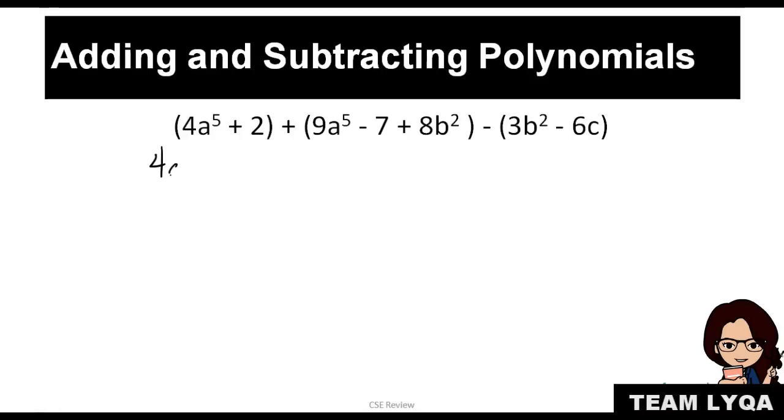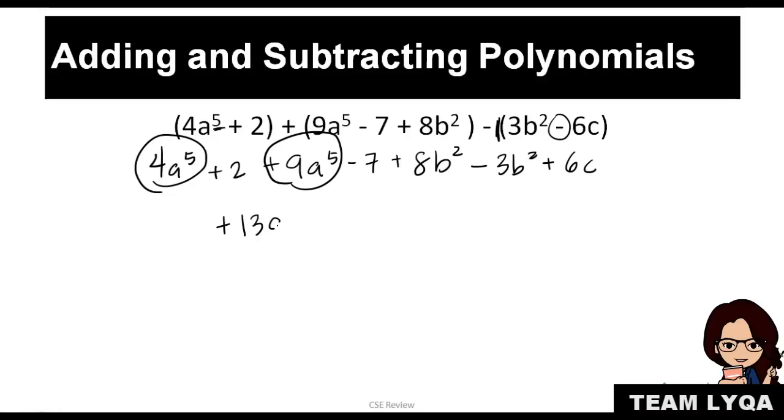So let's do it. Same concept. 4A to the 5th plus 2. This is plus so nothing will change in the sign. You can take everything out of the parenthesis. You have 9A to the 5th minus 7 plus 8B squared minus. So something will change because again minus 1, distribute it. So you have minus 3B squared then this will change sign because it's minus so it becomes plus 6C. Again now you have A, you have B but it doesn't matter. We're going to combine like terms. Just look for those with the same apelido. So we have the first apelido, the biggest, the A 5th.